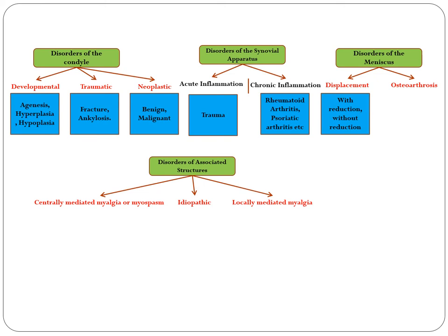Types of condylar disorders include developmental disorders such as agenesis, hypoplasia, and hyperplasia; traumatic disorders such as fracture and ankylosis from previous fractures; and neoplastic disorders. Disorders of the joint apparatus include acute inflammation and chronic inflammation — the latter due to trauma or rheumatoid arthritis.